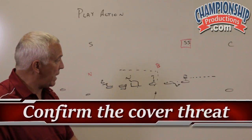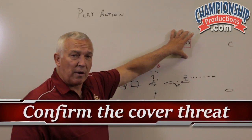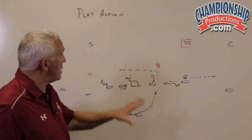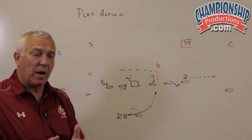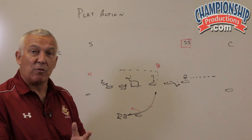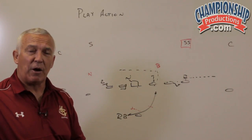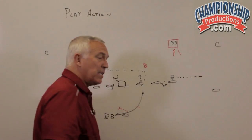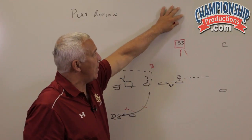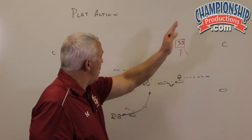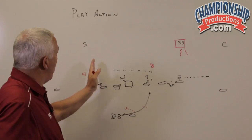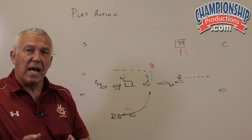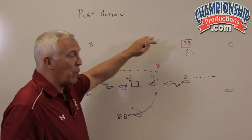Number two, the quarterback has to confirm the cover threat. What we talk about in our cover threat is first, who is the run force on our run game. If we know we're getting a safety coming down as the run player, we want to attack him. The quarterback is going to read these two safeties first because we want to hit the home run, come back to the intermediate route, or finally throw the check down if needed. The safeties tell us if we have a shot at the home run. If the safety is the down player — coming down inside or outside as the run support player — we want to attack that area, whether it's a post route from the front side, a backside far cross or backside post, or a vertical with a backside deep dig. We want to attack the player responsible for run force.